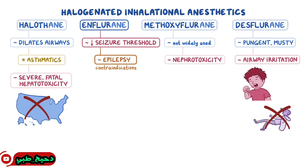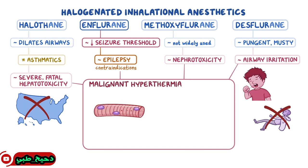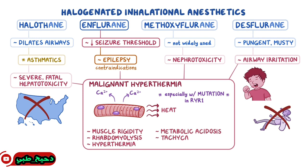There's one last side effect shared by all halogenated anesthetics, and that is they can cause a life-threatening condition called malignant hyperthermia, where the anesthetic agents cause increased release of calcium stored in muscle cells, causing them to contract without resting and to generate heat. This is especially true in people with a mutation of the RYR1 gene that makes them more susceptible. Symptoms include muscle rigidity, rhabdomyolysis, hyperthermia, metabolic acidosis, and tachycardia.